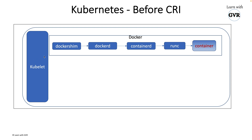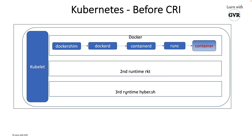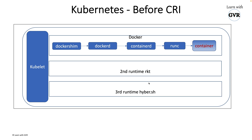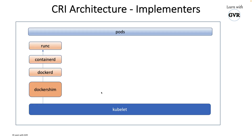Later, a second runtime was introduced — rkt — and then Hyper, and many more container runtimes were introduced. Kubelet had code to create Docker containers, but as soon as the number of container runtimes increased, it became very hard to modify the kubelet code every time. Hence, the Container Runtime Interface — CRI — was introduced.